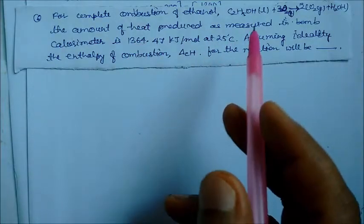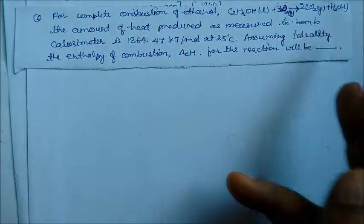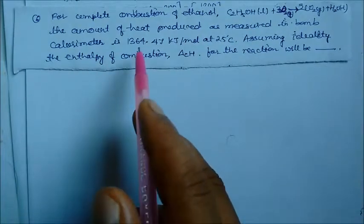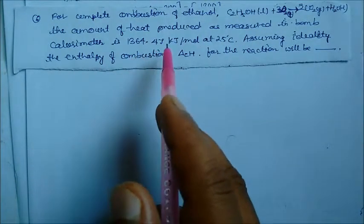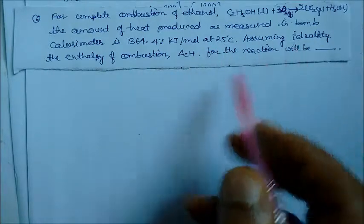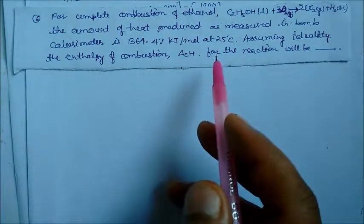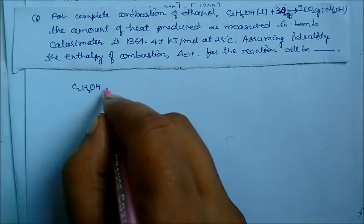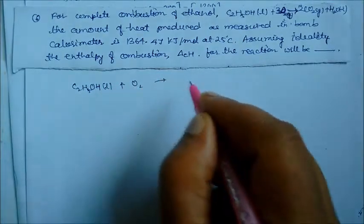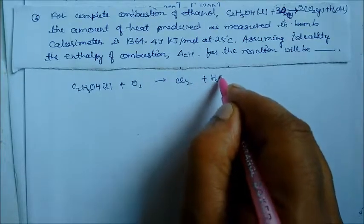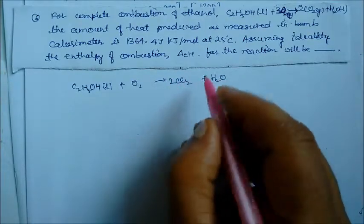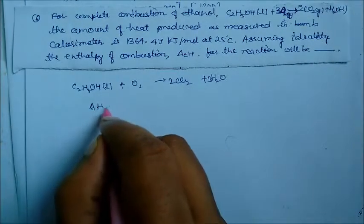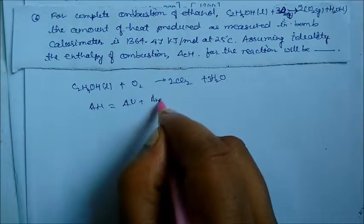Complete combustion of ethanol: C₂H₅OH reacts with oxygen to give 2 molecules of carbon dioxide and 3 molecules of water. The heat produced as measured in a bomb calorimeter is 1364.47 kilojoule per mole at 25 degree centigrade. Write the equation and note that water is in liquid state and CO₂ is in gaseous state. Use delta H equals delta U plus delta N_g times R times T.